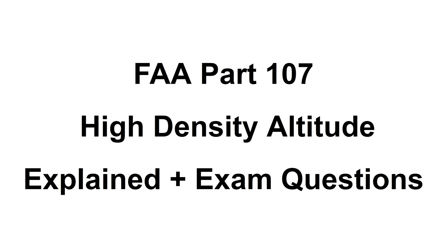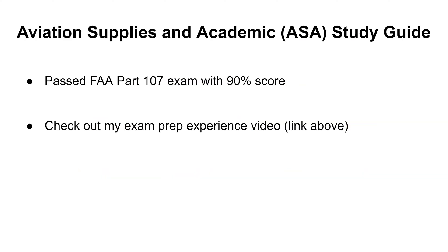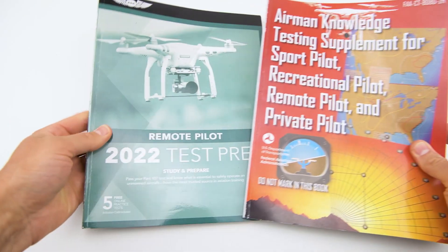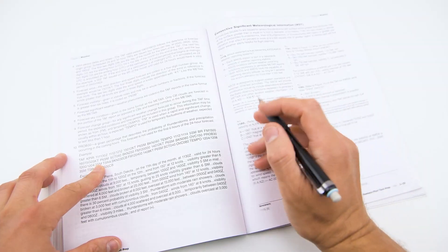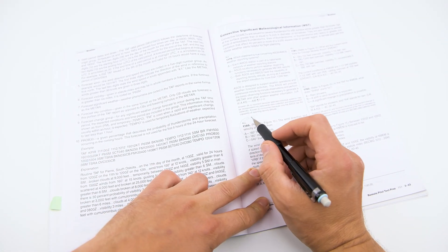One of the frequent topics appearing on the FAA Part 107 exam is high density altitude. In this video I will explain what you need to know on this topic and go over several questions that often appear on the exam. Most of the questions in this video are coming from the study guide I used to prepare for the exam, which I successfully passed with a 90% score in 2022. Check out the video on how I prepared for the exam in the link above and in the description, and take a look at the study guide I used in the description as well.